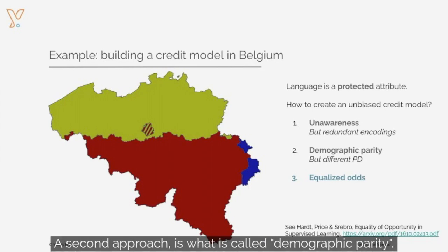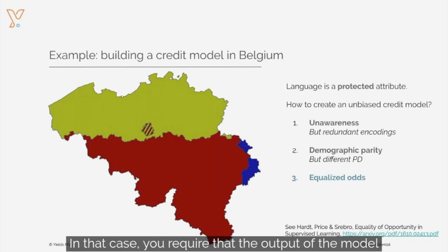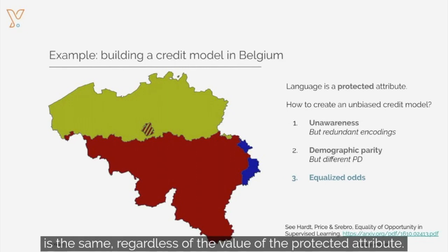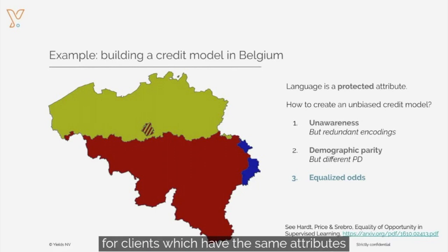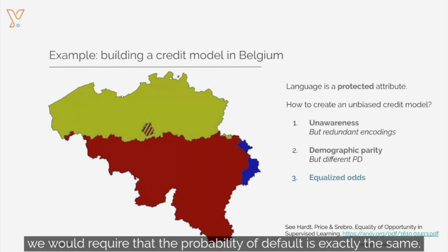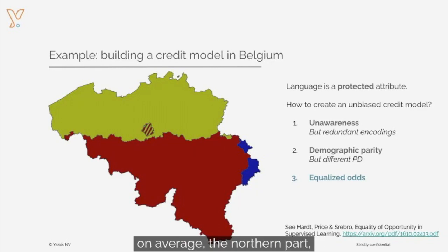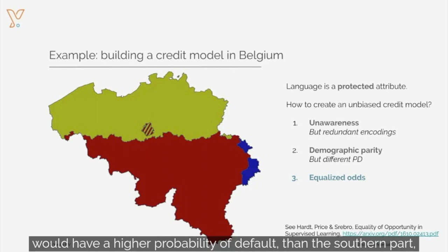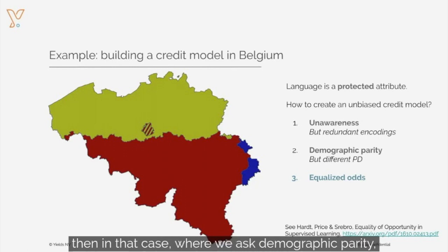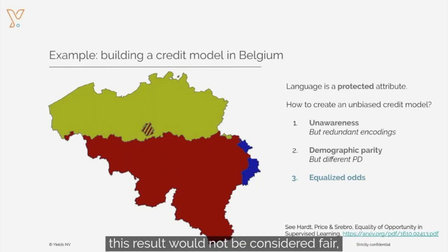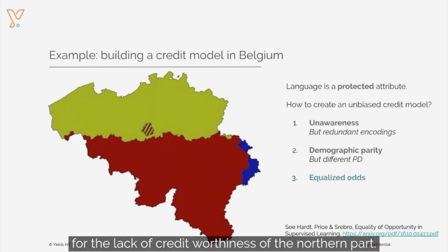A second approach is what is called demographic parity. In that case, you require that the output of the model is the same regardless of the value of the protected attribute. So in the case of Belgium, for clients which have the same attributes on everything except the language, we would require that the probability of default is exactly the same. Now, in some cases this is not considered to be fair. For instance, if on average the northern part of Belgium would have a higher probability of default than the southern part, then under demographic parity the southern part would effectively pay for the lack of credit worthiness of the northern part.